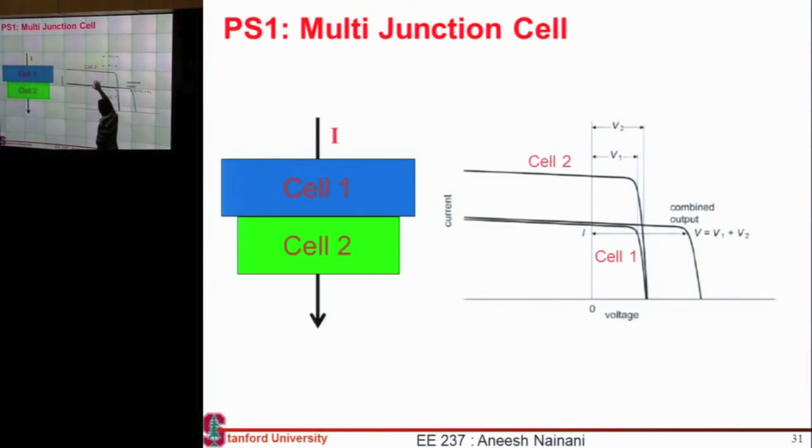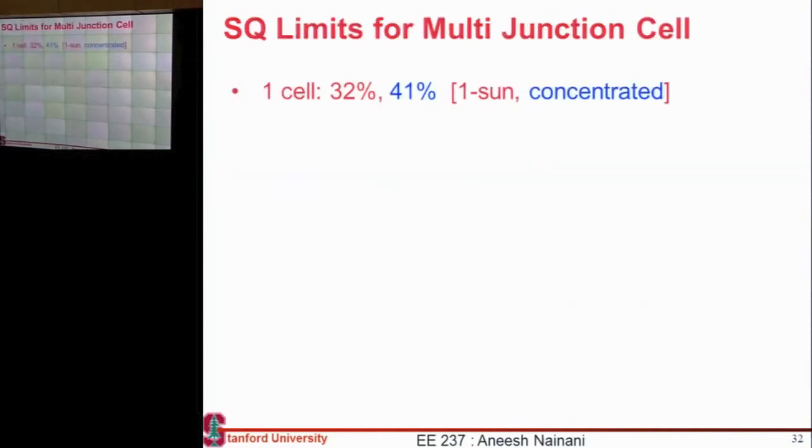Say cell 2 over here might have a higher current, but the amount of overall current in the system is going to be limited by the cell which has lower current. Your efficiency in that case would be, your voltages will add up, so your combined voltage would be V1 plus V2, but the current would be limited by the cell which has lower current among the two. You have that reference and now you should be hopefully able to optimize the efficiency. I'm going to give you the reference numbers anyway.